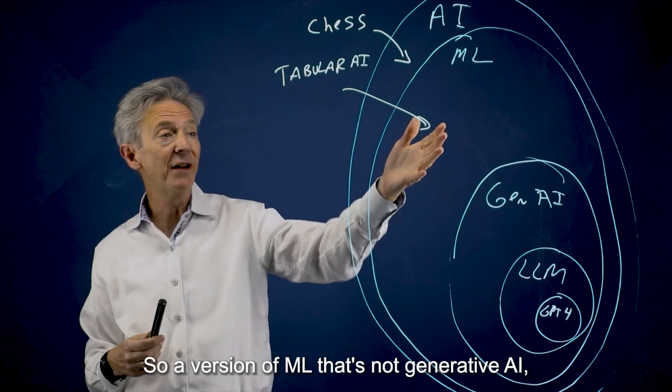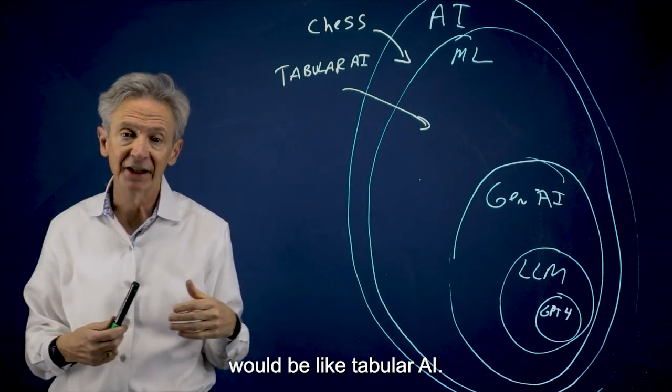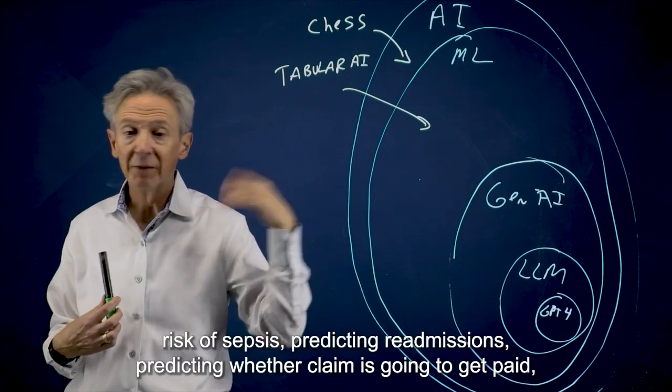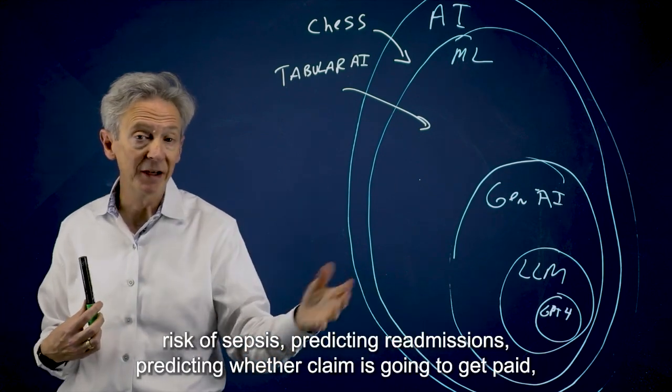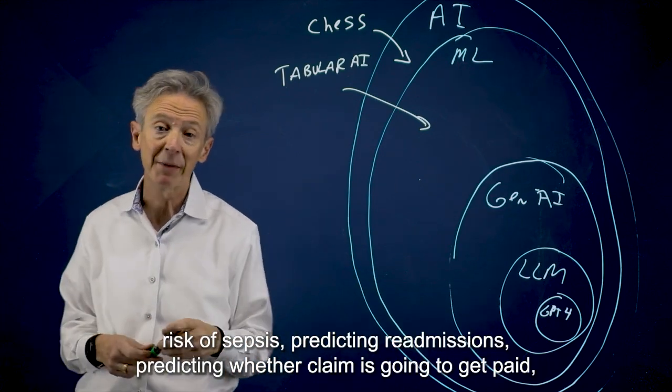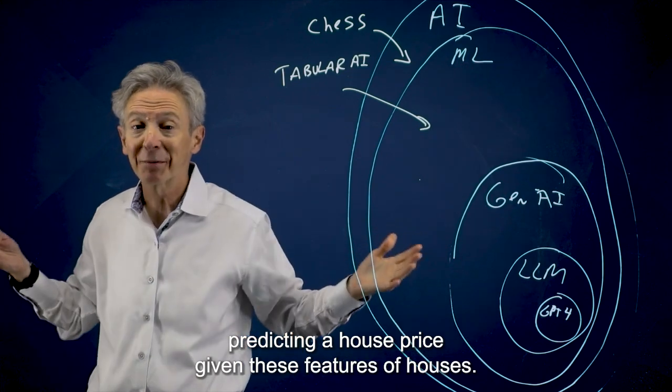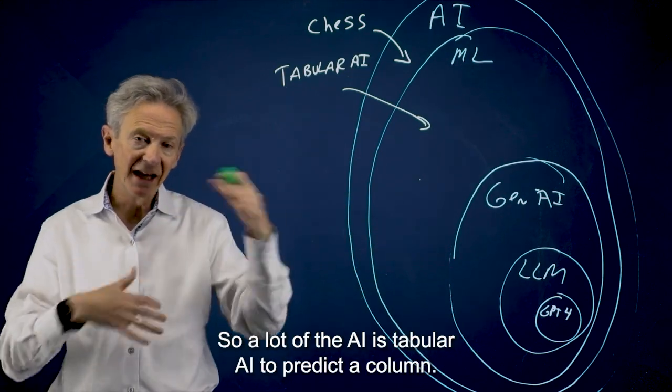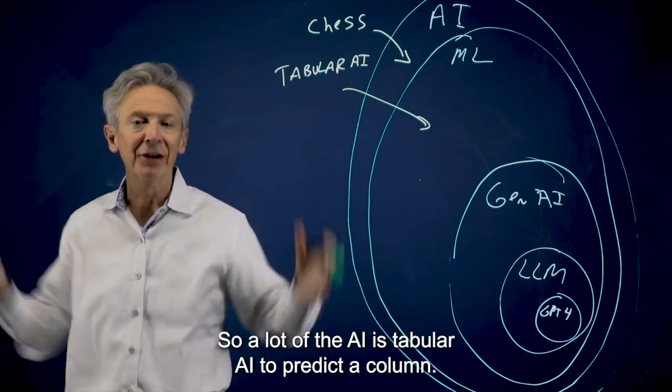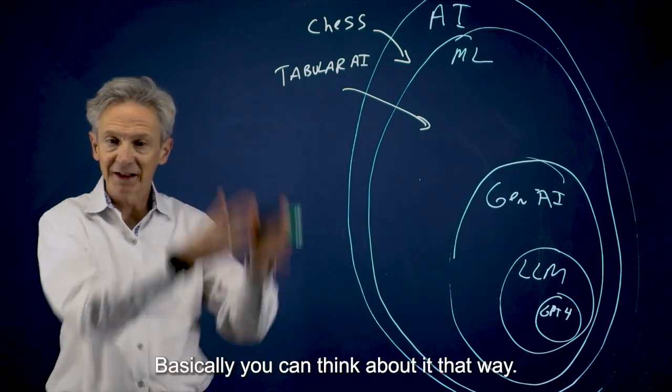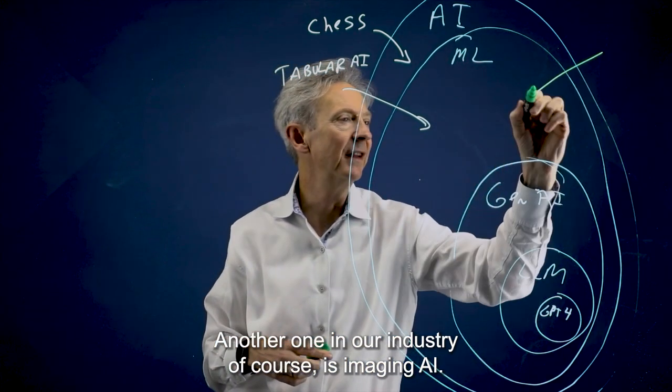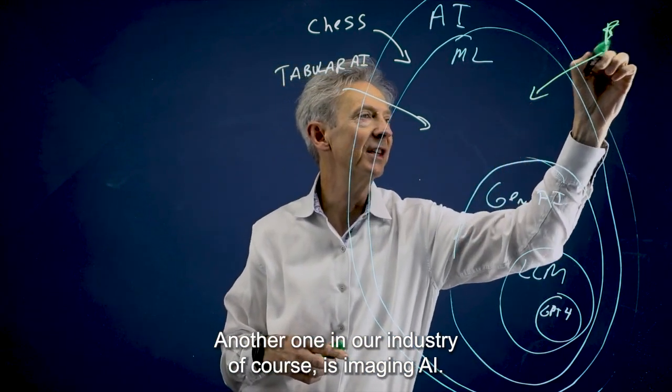So a version of ML that's not generative AI would be tabular AI. So things in our industry like predicting risk of sepsis, predicting readmissions, predicting whether a claim is going to get paid, predicting a house price given these features of houses. So a lot of AI is tabular AI to predict a column, basically. Another one in our industry is imaging AI.